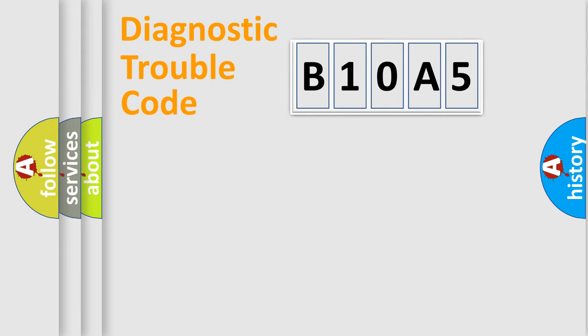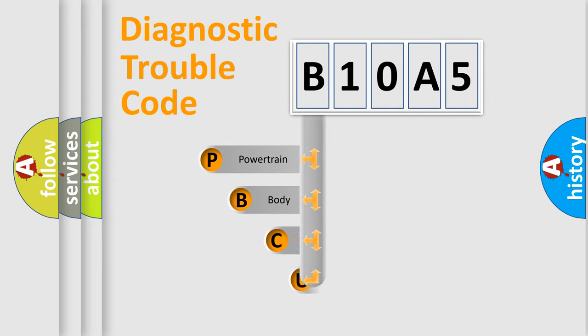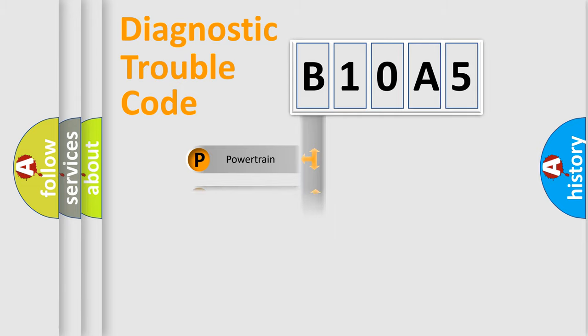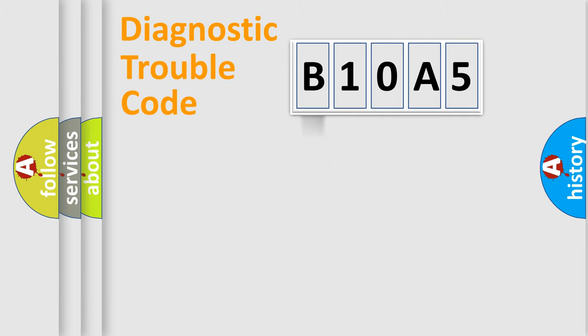Let's do this. First, let's look at the history of diagnostic fault code composition according to the OBD2 protocol, which is unified for all automakers since 2000. We divide the electric system of the automobile into four basic units: Powertrain, Body, Chassis, and Network.